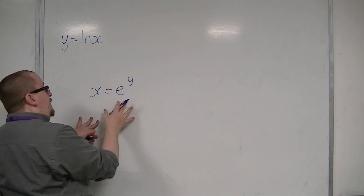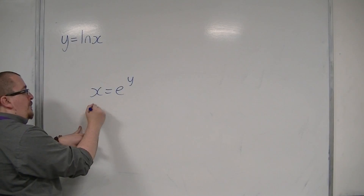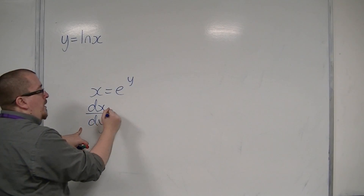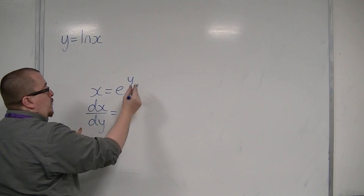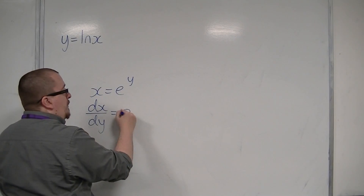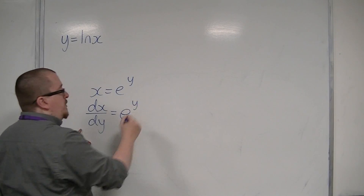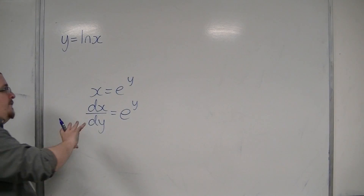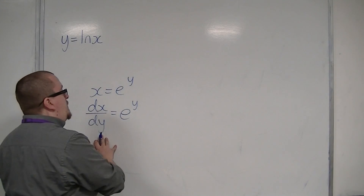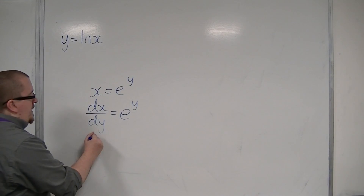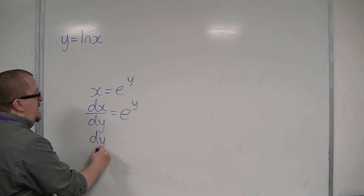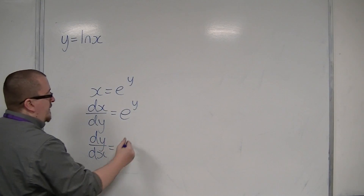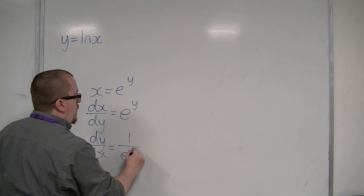Now, if I differentiate this with respect to y, so I find dx by dy — differentiating e to the y with respect to y is just e to the y. Now, if dx by dy is e to the y, then if I flip the derivative to dy by dx, then that's 1 over e to the y.